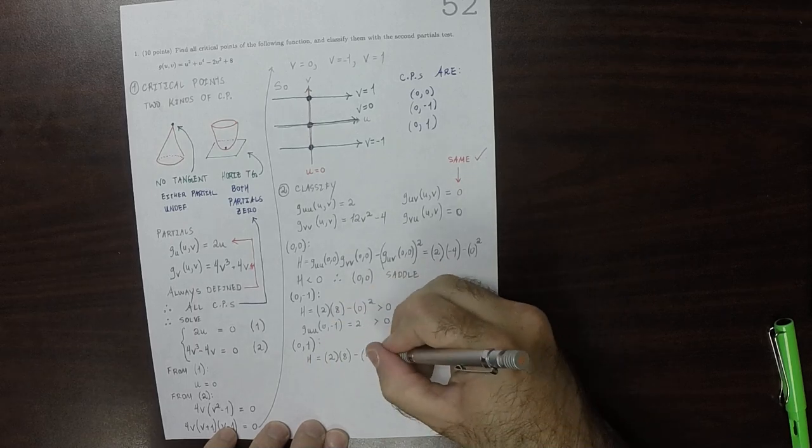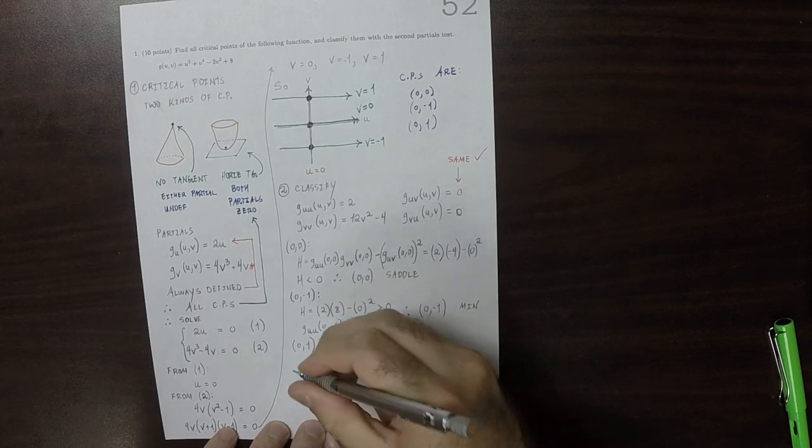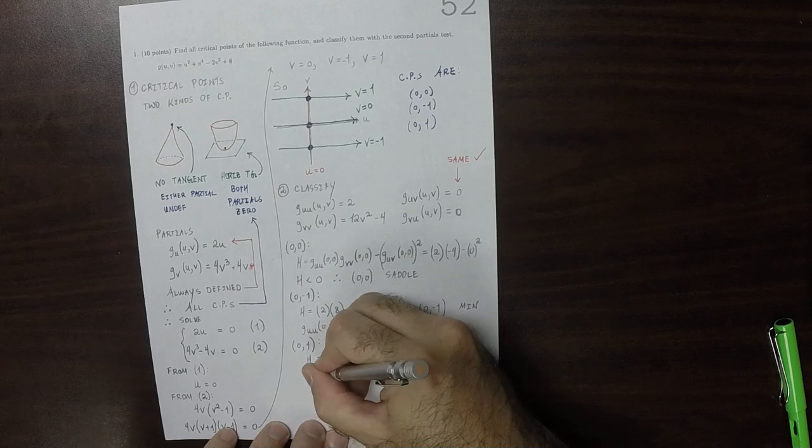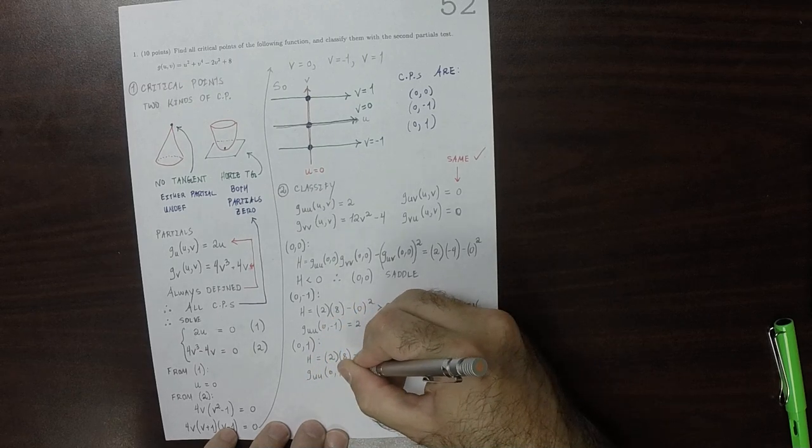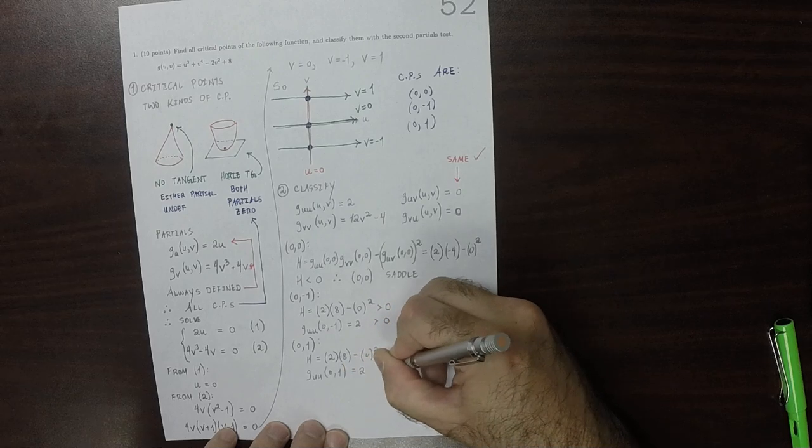So that's 16, which is positive, again. And then the U, U partial, at zero, one, is again two, which is again positive. And therefore, that point is also a min.